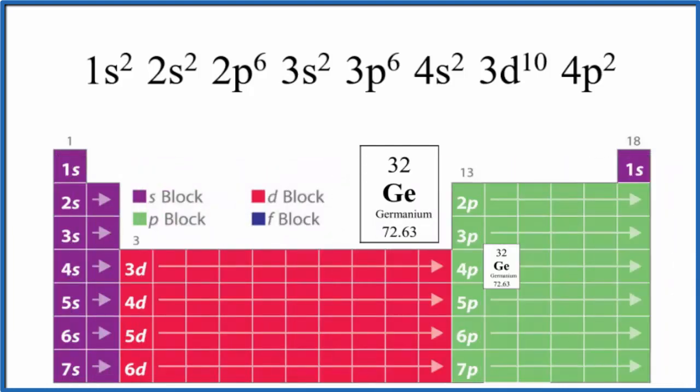Probably a better way though is to use the periodic table broken up into these blocks. We have the S block, the D block, the P block, and then down here the F block.